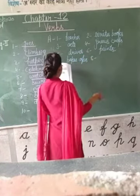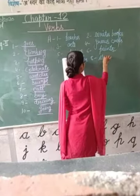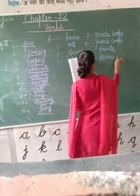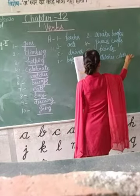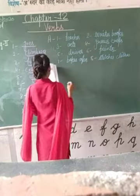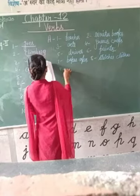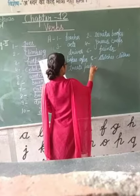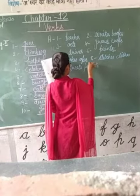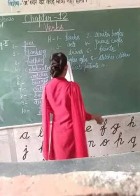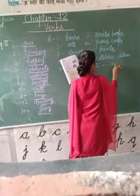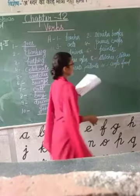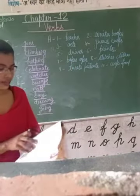Eight: a tailor — stitches clothes. Nine: a doctor — treats patients. Ten: a chef — cooks food. So this is exercise number A.